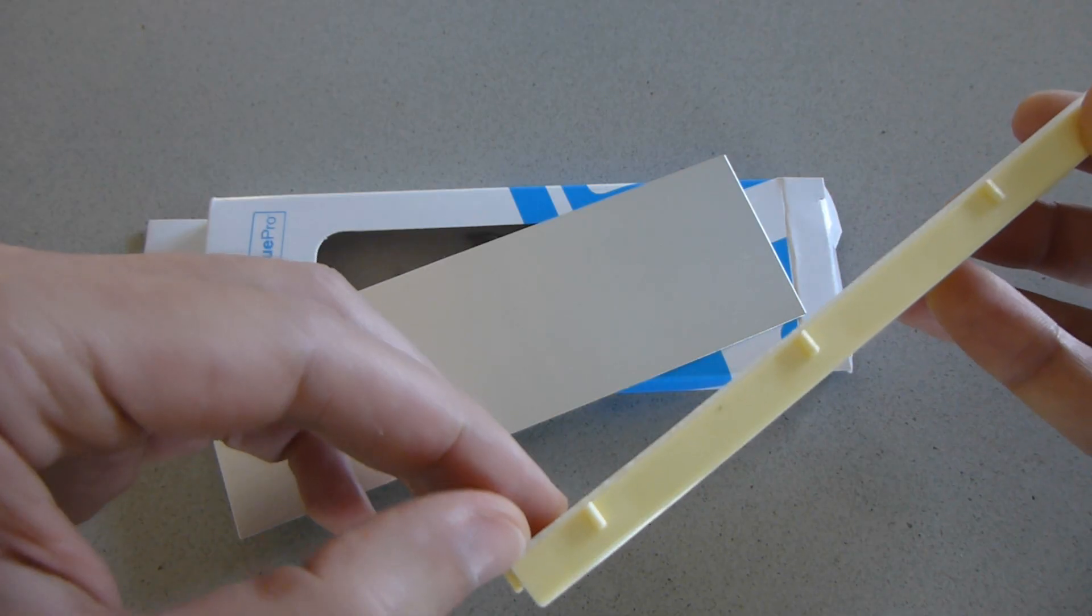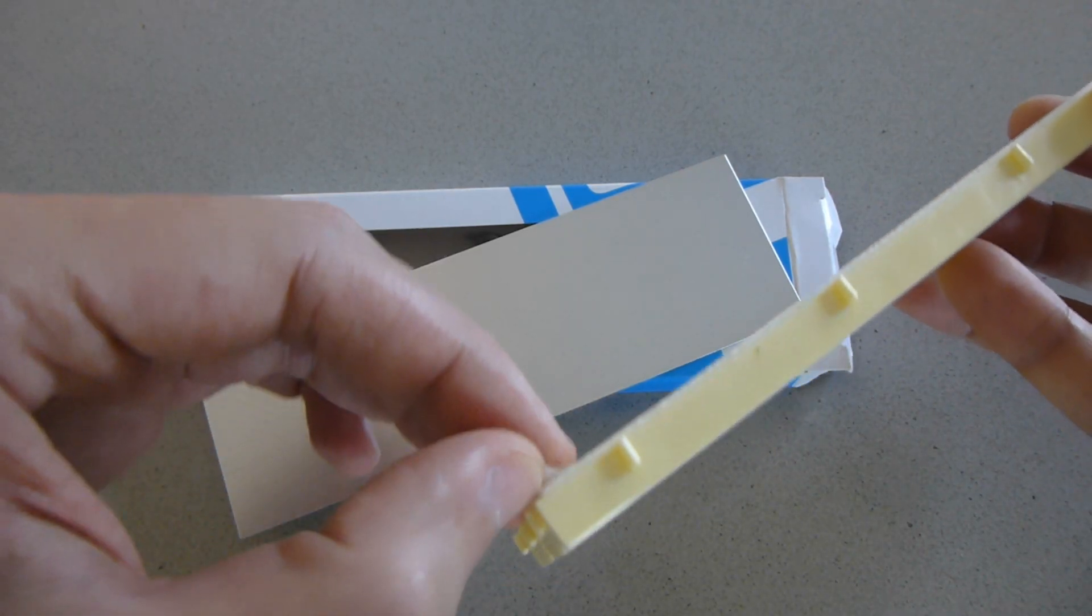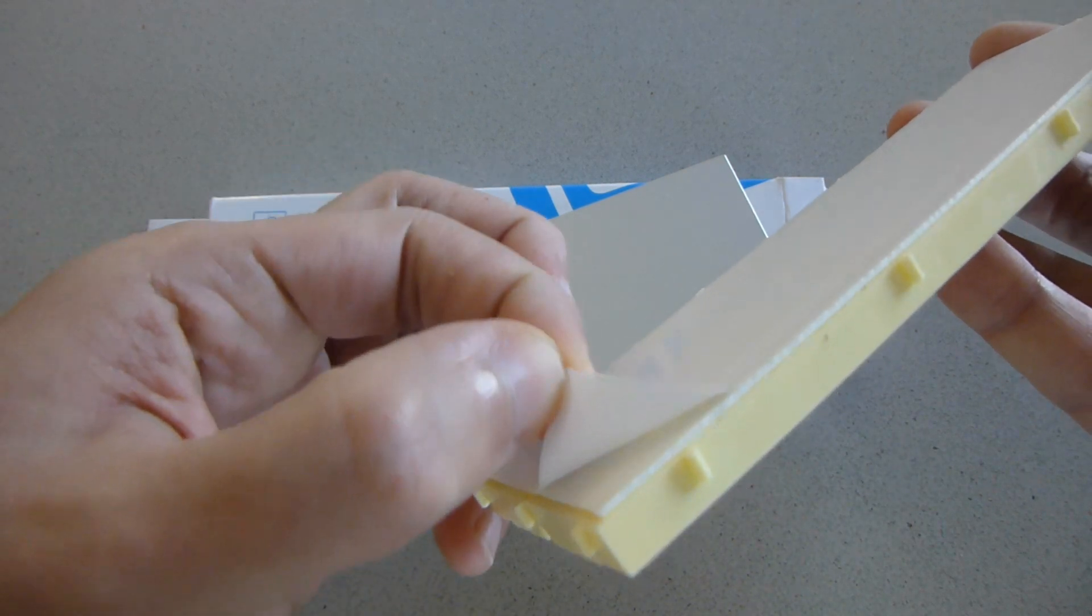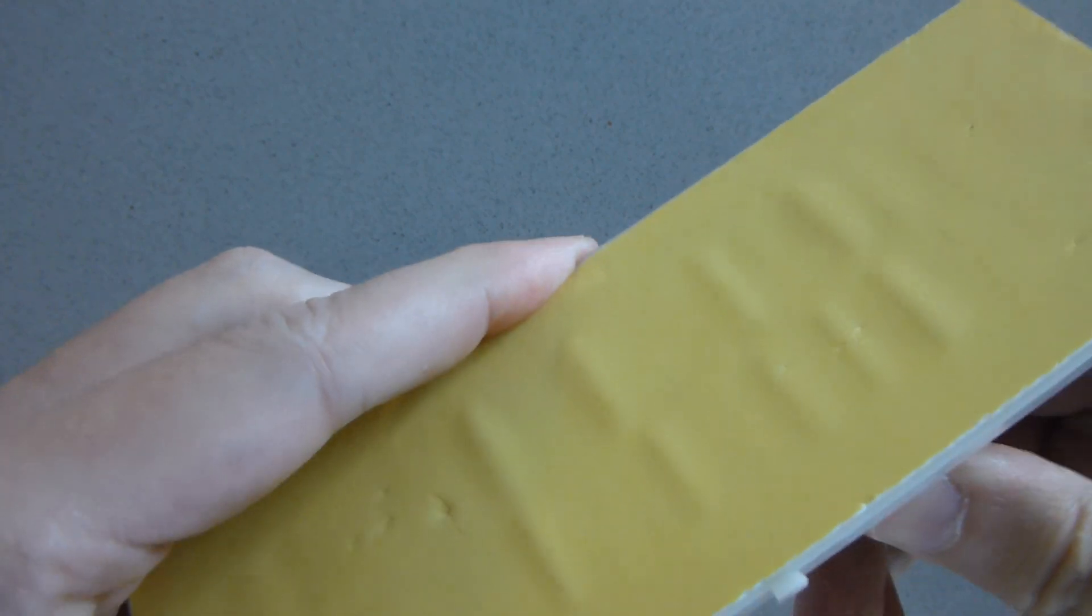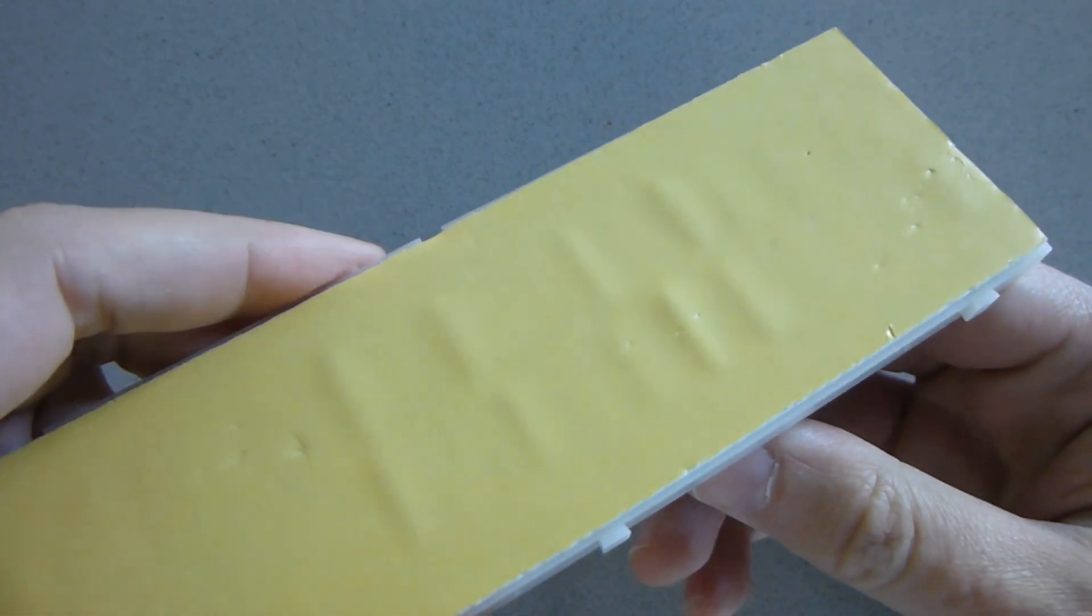Most breadboards come with double-sided adhesive on the bottom so you can choose to place it on a board, but in my opinion it should also come with a backplate that you can install if you plan to use it as a standalone breadboard. If you use it without any support, the sticky will come off when inserting components.